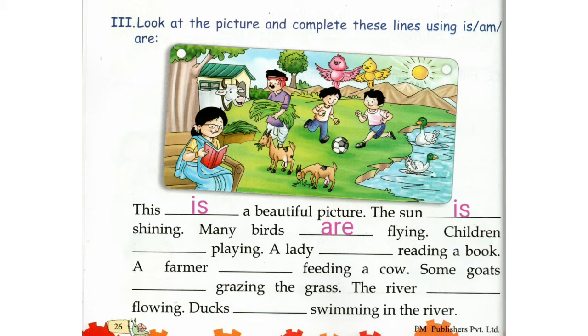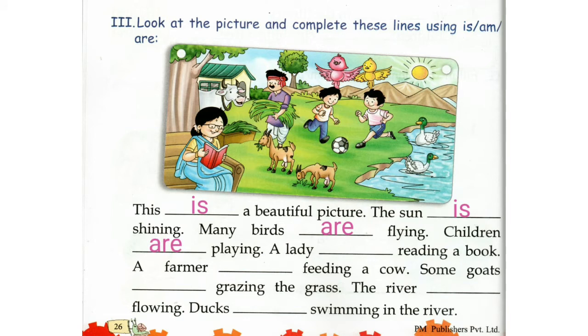Children. Children means plural. We see two boys playing football, right? So we will use Are. Children are playing.